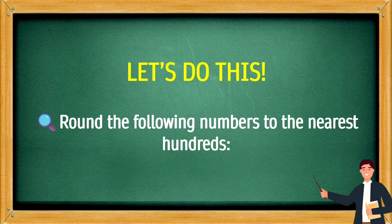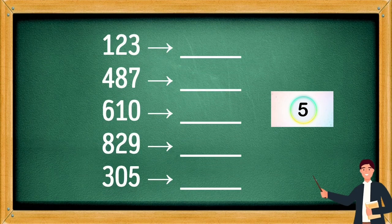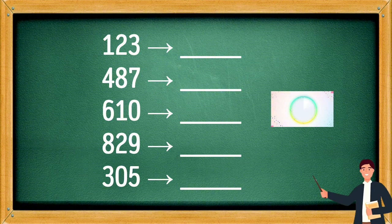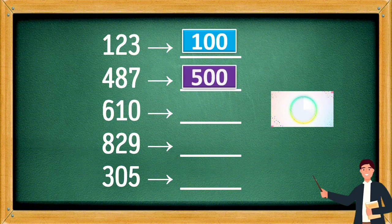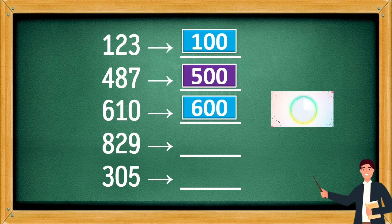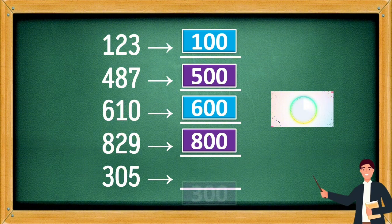Let's do this. Round the following numbers to the nearest hundreds. 123 will be rounded to 100. 487 will be rounded to 500. 610 will be rounded to 600. 829 will be rounded to 800. 305 will be rounded to 300.